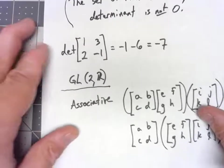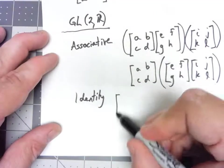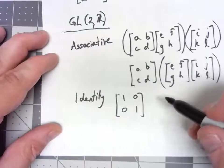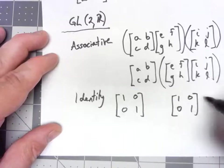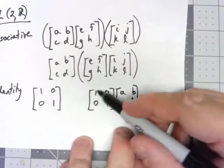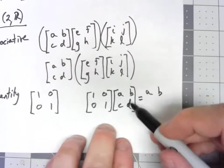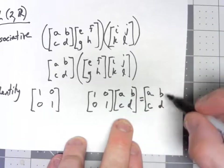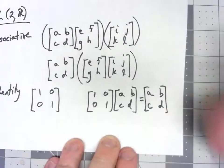The next thing we need to show that this is a group, we need an identity. And in this case, the identity matrix 1, 0, 0, 1, because if I took 1, 0, 0, 1 times any matrix A, B, C, D, when I go across down, I get A plus 0 gives me A, B plus 0 gives me B, 0 plus C gives me C, 0 plus D gives me D. And we should verify that it works the other way too.